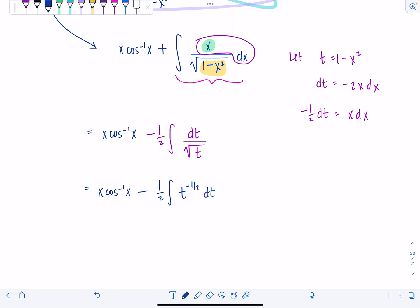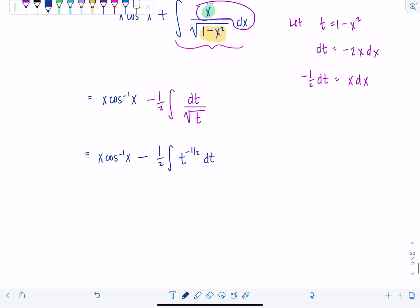And then when we anti-differentiate, you're going to add 1 to the exponent here, and then divide by the new exponent. So we've got x cosine inverse of x minus 1 half. Adding 1 is going to give me t to the positive 1 half. If I divide by the new exponent, dividing by 1 half is equivalent to multiplying by 2 over 1, and then we've got plus c.